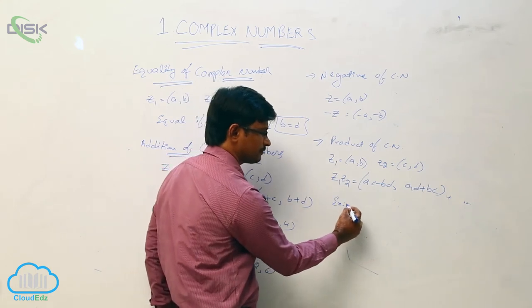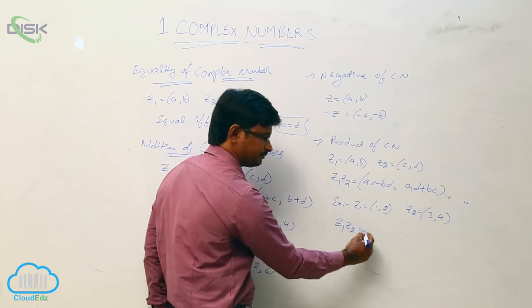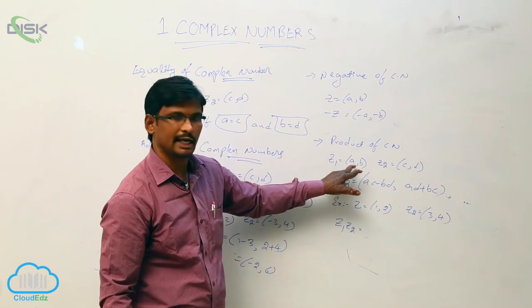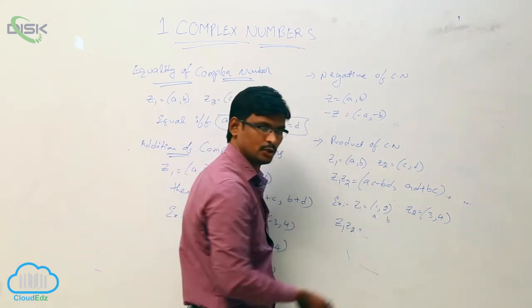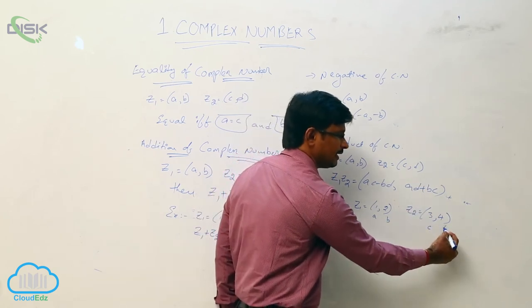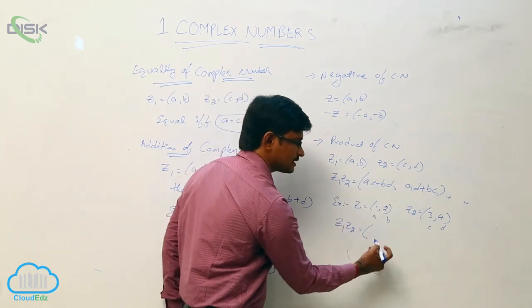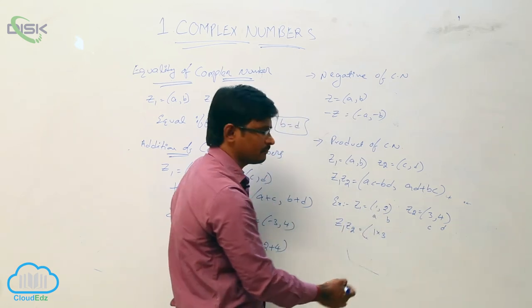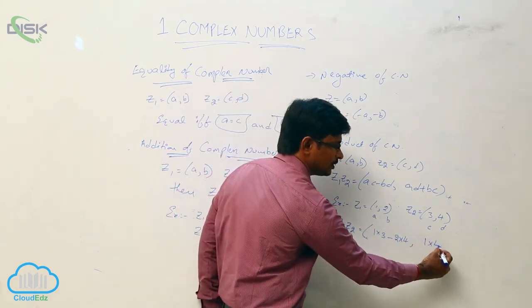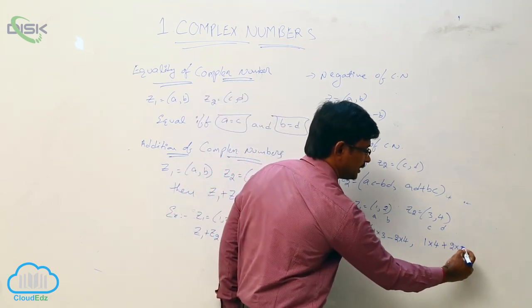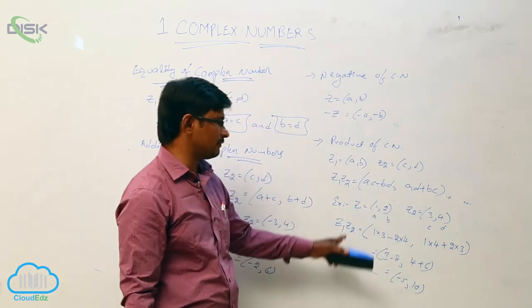We will see one example. Let Z1 equal to 1 comma 2 and Z2 equal to 3 comma 4. Comparing with A comma B and C comma D: A is 1, B is 2, C is 3, D is 4. Then Z1 into Z2 equals AC minus BD comma AD plus BC. AC is 1 into 3, minus BD is 2 into 4. AD is 1 into 4, plus BC is 2 into 3. So the value is 3 minus 8 comma 4 plus 6, which equals minus 5 comma 10. This is the product of the two complex numbers.